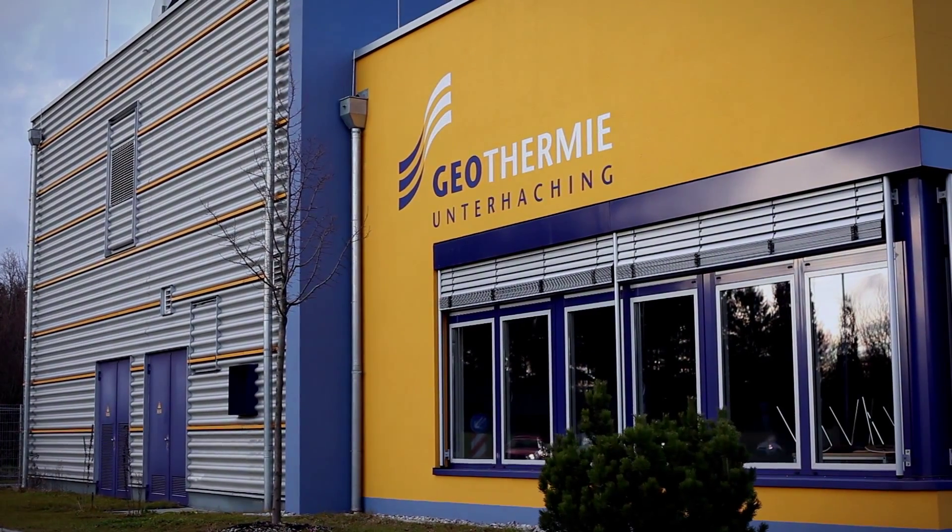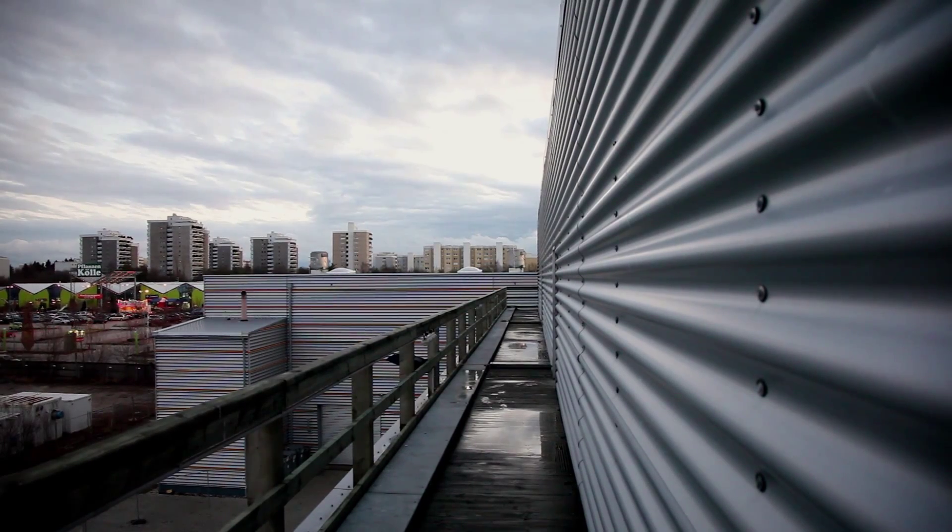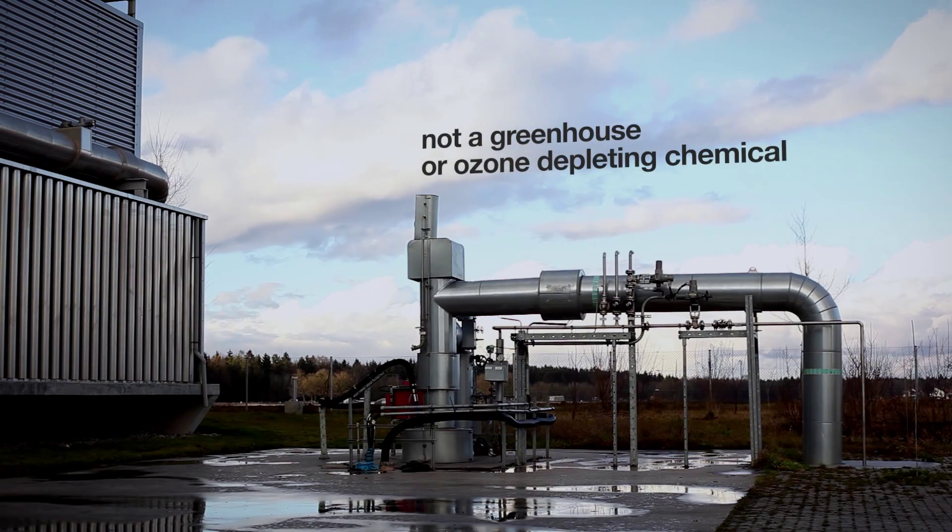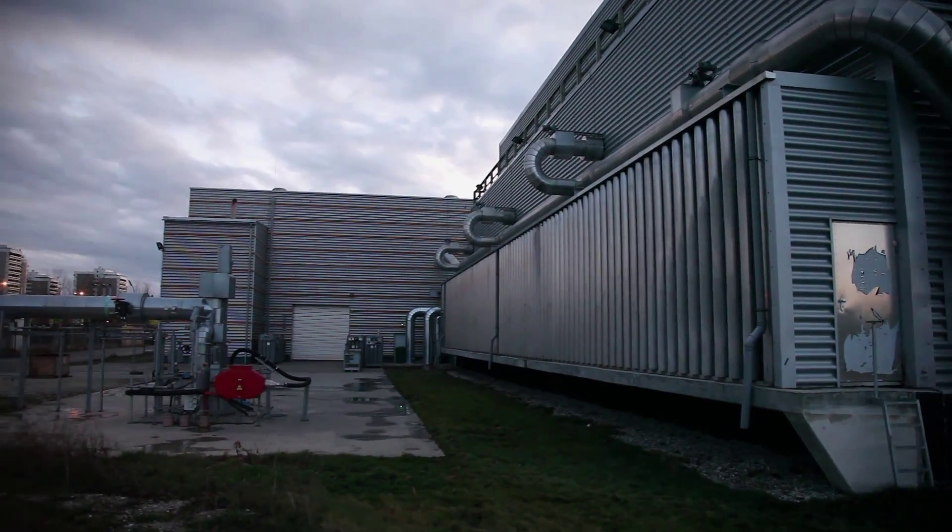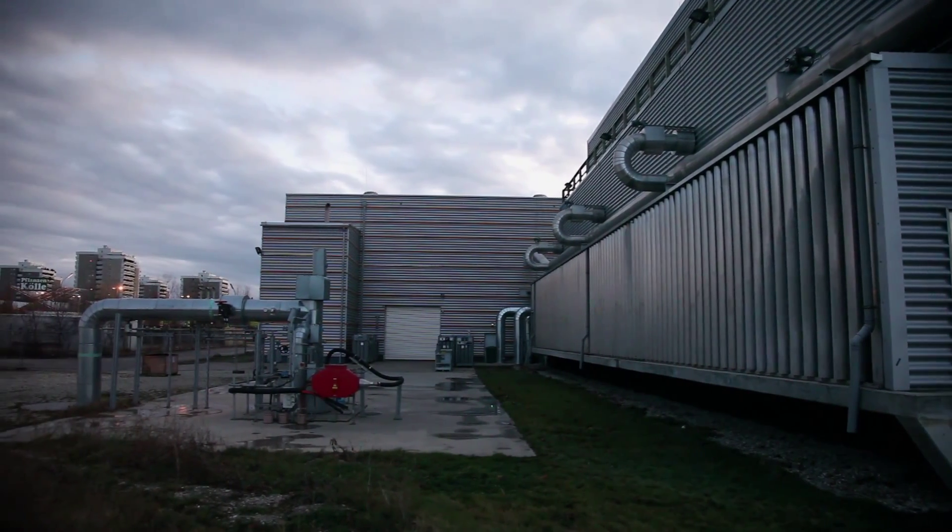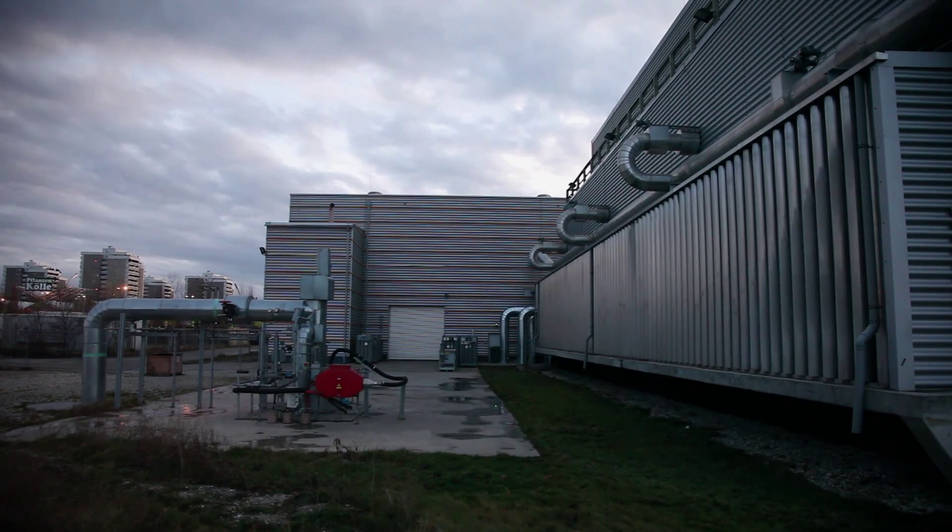Ammonia is not a greenhouse gas or an ozone-depleting chemical, and in fact, the ammonia-water mixture is often sold as a fertilizer. Now you have seen the electricity-generating portion of the Kalina Cycle power plant in Unterhaken, Germany.